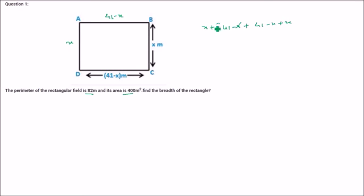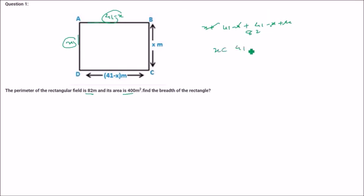The x terms cancel, giving 82, which matches the given value. The area is 400 meter square, and area is length into breadth. So you can take either side as length. Length into breadth is x into 41 minus x, and this is given to be 400 meter square.